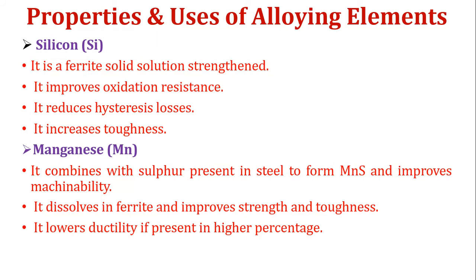Next element — silicon: it is a ferrite solid solution strengthener, improves oxidation resistance, reduces hysteresis losses, and increases toughness. Next alloying element — manganese: it combines with the sulfur present in steel to form manganese sulfide and improves machinability. It dissolves in ferrite and improves strength and toughness. It lowers ductility if present in a higher percentage.